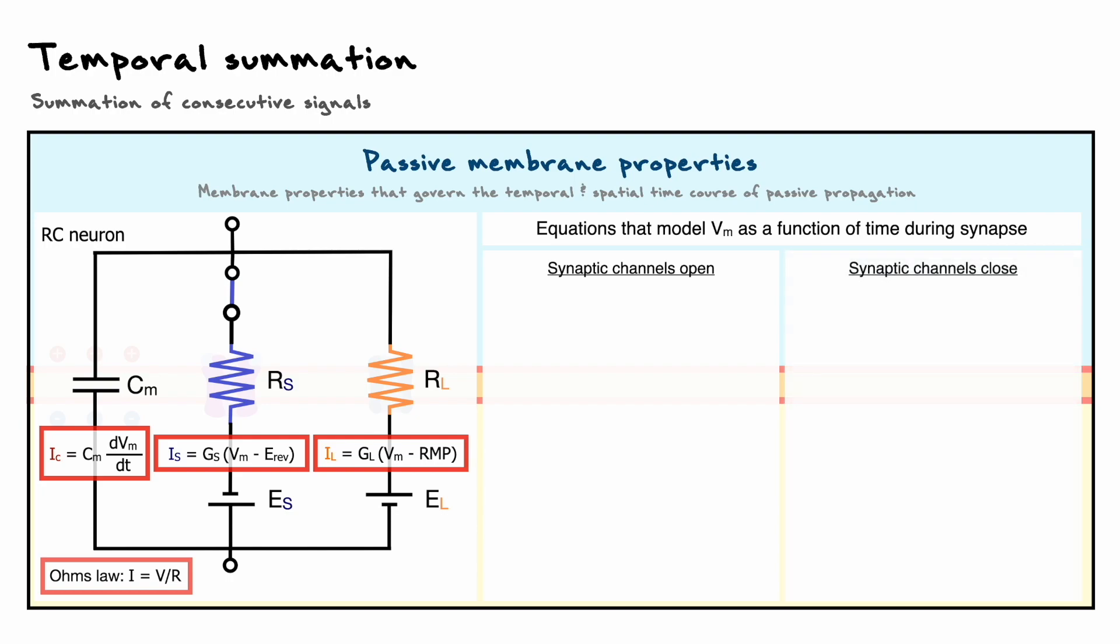To find the equation of the membrane potential as a function of time, we can establish that the current as a function of time during the synapse will be the sum of the current coming from the capacitor and the resistors. Next, we can substitute the currents for the capacitor and the resistor by their definitions.